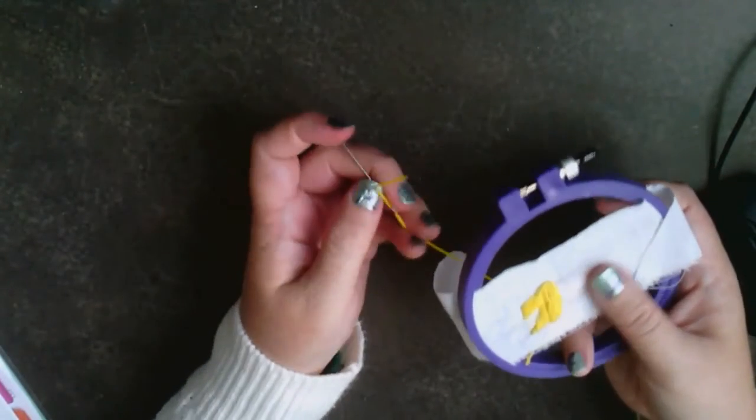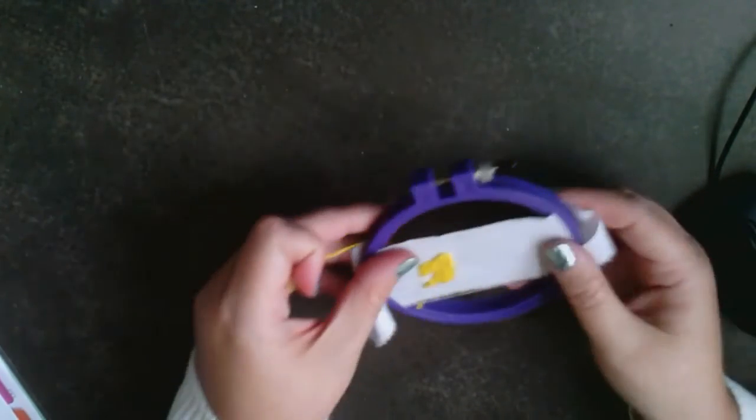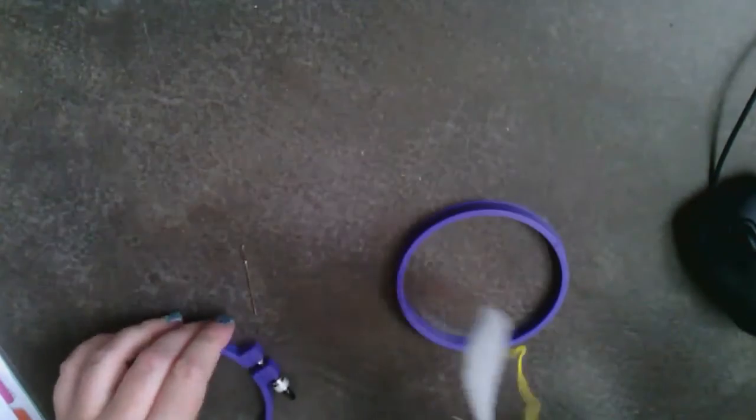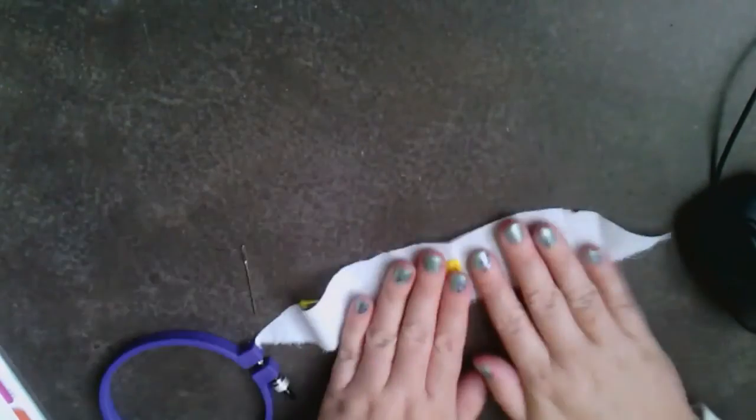Okay, you guys get the basic gist of it. So once you're all finished, you'll pop it off of the embroidery hoop, take your needle off and tie it in the back, and you're all done with the embroidery.